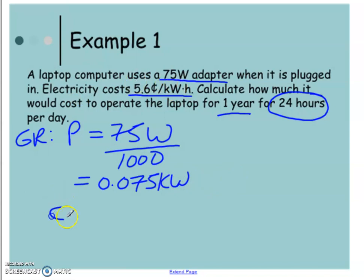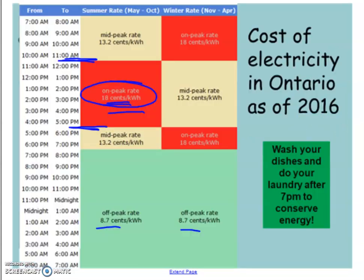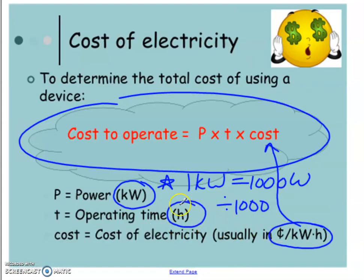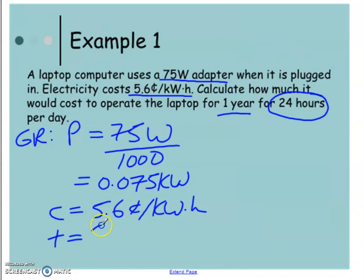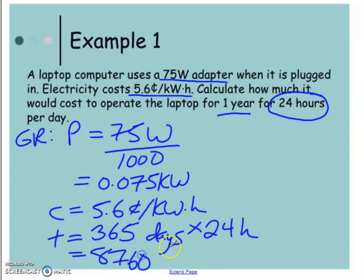And we're told the cost. So we have 5.6 cents per kilowatt hour. And now we also have the time, one year for 24 hours. But if you remember, our time has to be in hours only. So we have to take that one year, which is 365 days, we're going to assume it's not a leap year. So 365 days, and we're going to multiply that by 24 hours because it's running 24 hours a day. So 24 times 365 is 8,760 hours.